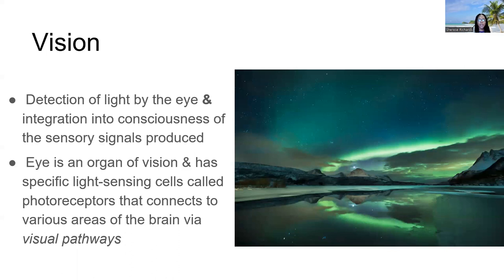Our eyes control the entrance of light into the brain. We have certain receptors on the eye that can specifically detect light — these are called photoreceptors. These connect to other areas of the brain via what is called the visual pathway. For medical or graduate school you'd learn the complex visual tracts, but here we're focusing on the structures of the eye.